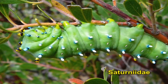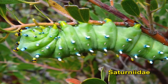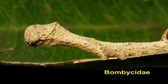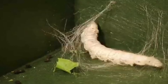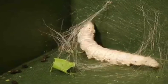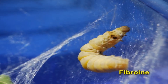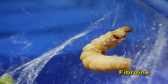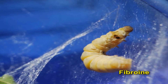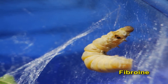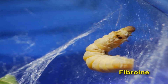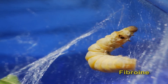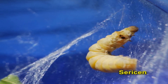Insects mainly belong to two families, namely Saturniidae and Bombycidae, which spin silk fiber. Bombyx mori, belonging to Bombycidae, produces a delicate twine thread of silk fibroin which is coated by a protective cover of sericin.